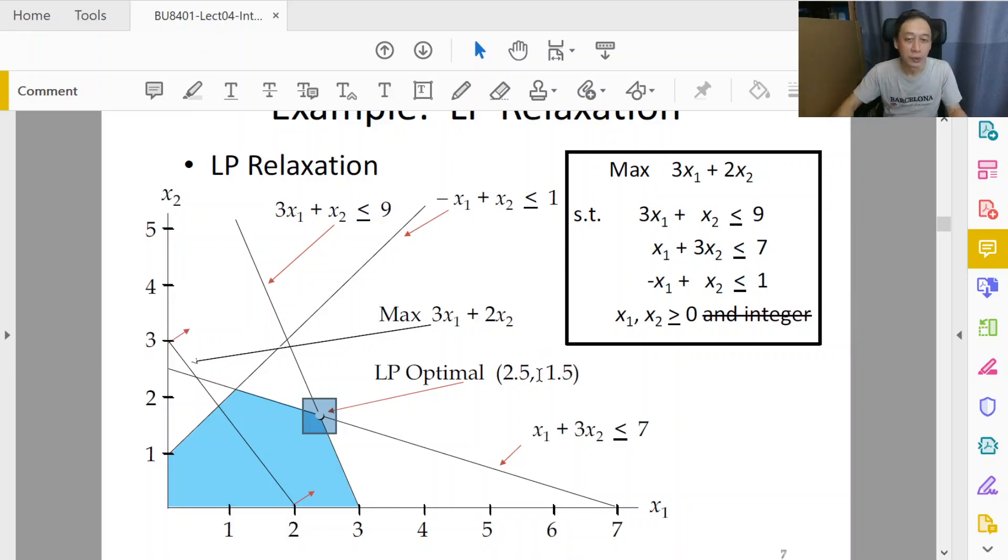Within the set of feasible solutions, this point is the best point in terms of giving us 3 times 2.5 plus 2 times 1.5 being the highest value, which is right because we're trying to maximize this expression 3x₁ + 2x₂. So this point is optimal, and if we round because they are 0.5, we round to 3, 2. Can we see what's going on here? Is there a problem?